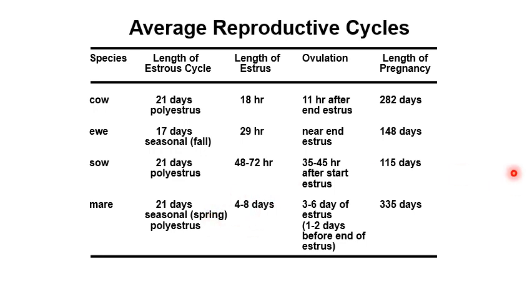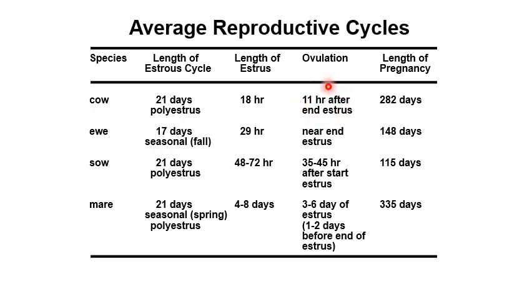For ovulation — the release of the egg from the tertiary follicle relative to the LH surge — in the cow, ovulation occurs about 11 hours after the end of estrus, or about 29 hours after the onset of estrus. This places ovulation already in the metestrus stage, since it occurs after the end of estrus.